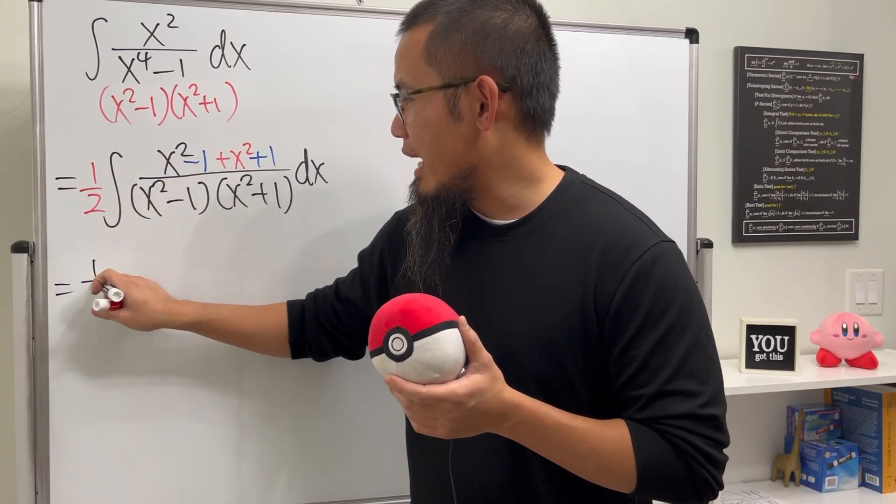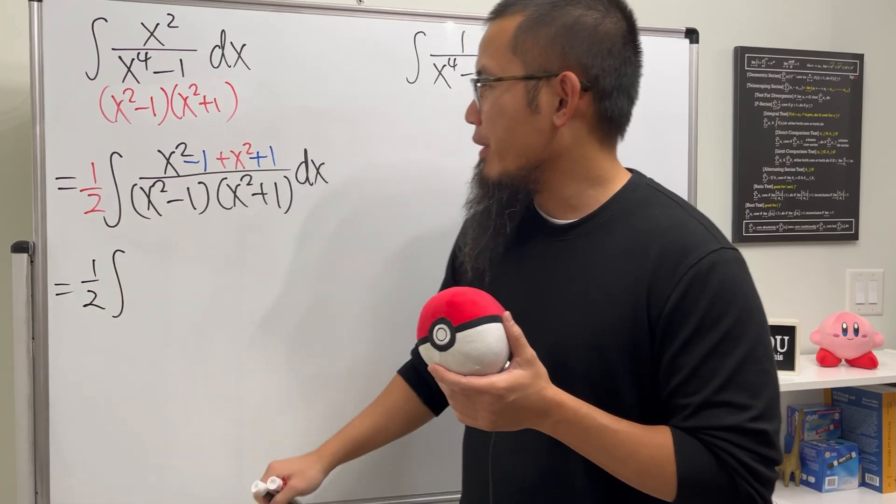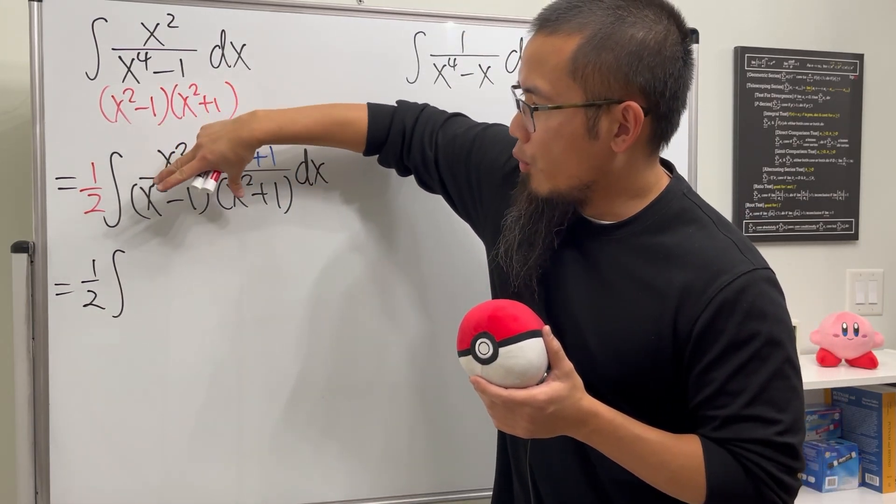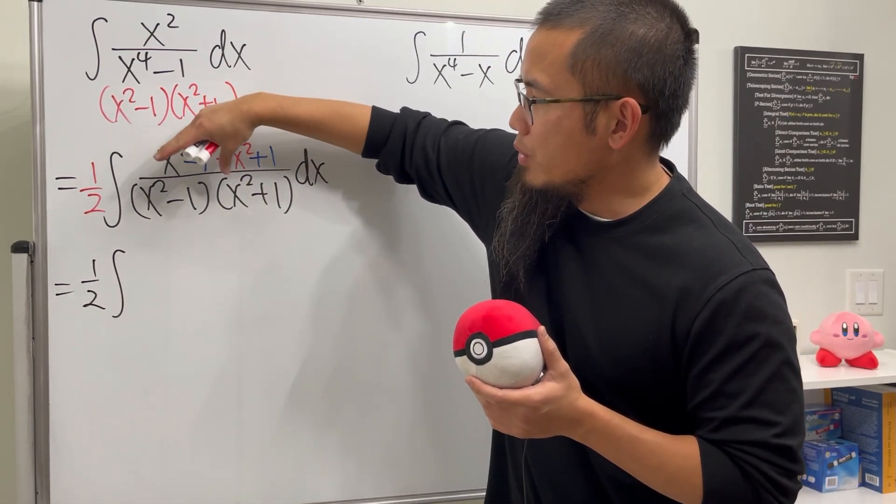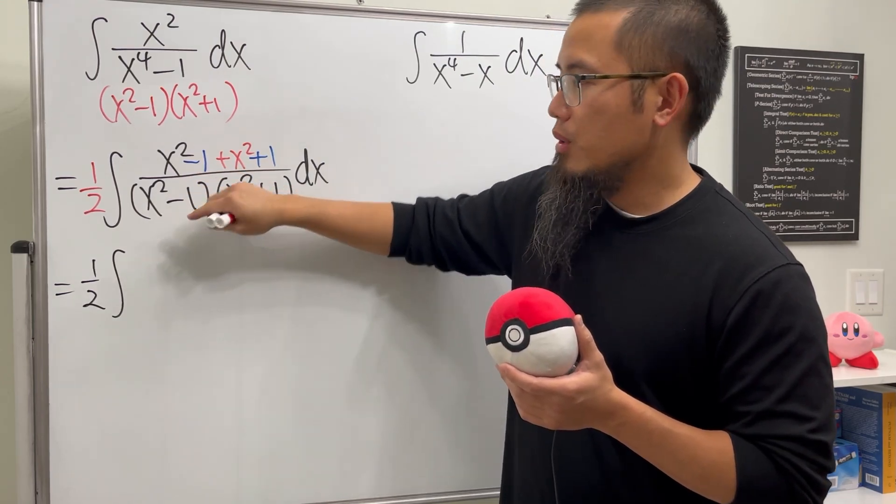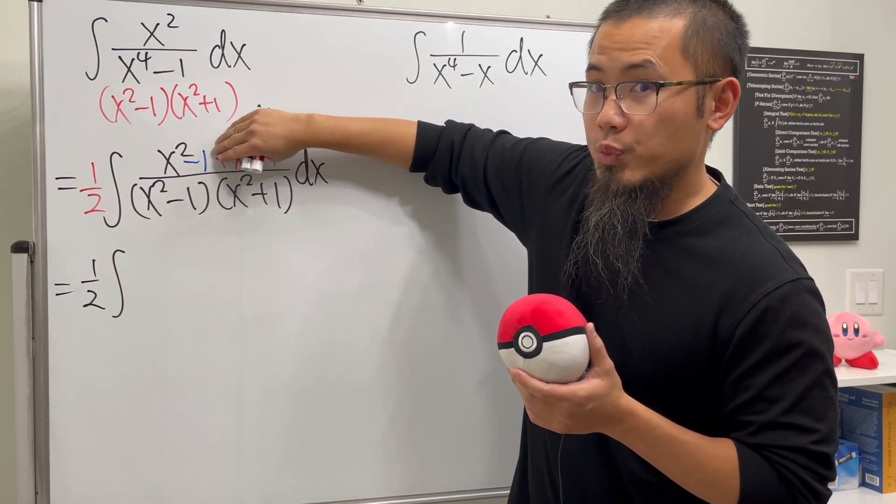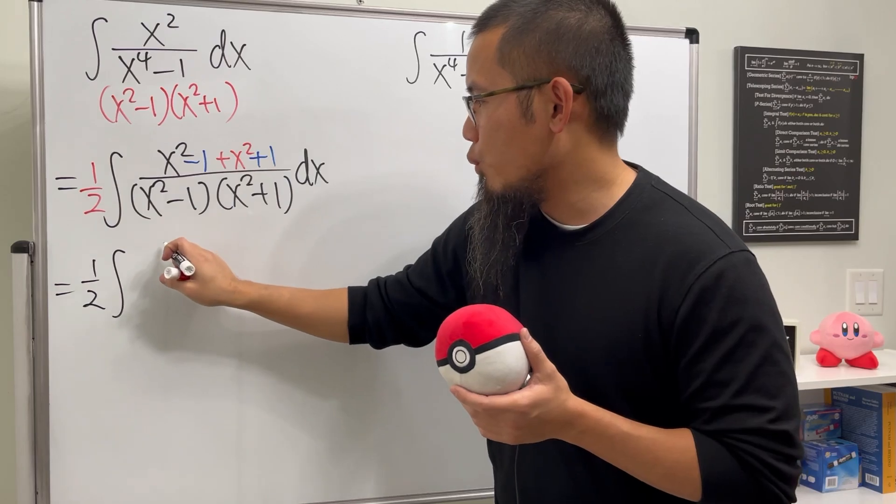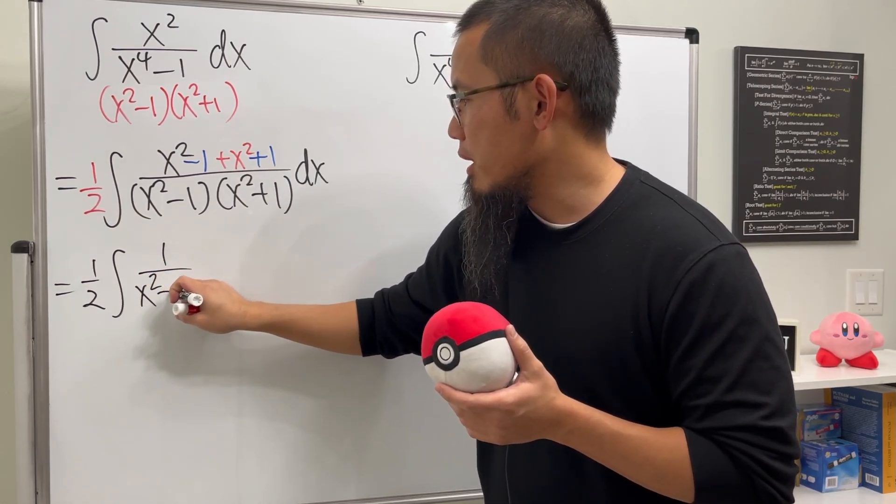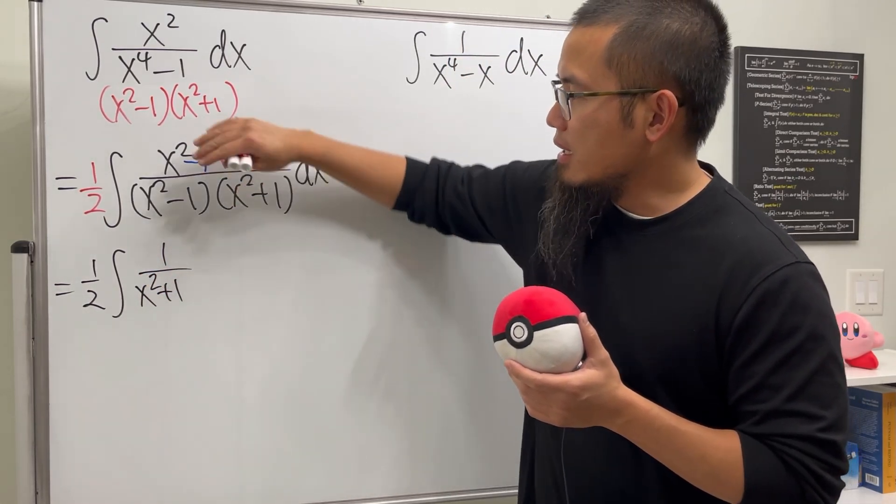Check this out. All the way in the front, we have the 1/2, and then we have the integral. I'm going to just put this over the denominator. And when we do that, this and that cancel. So, just ignore that. We get 1 over that. So we have 1 over x² + 1.